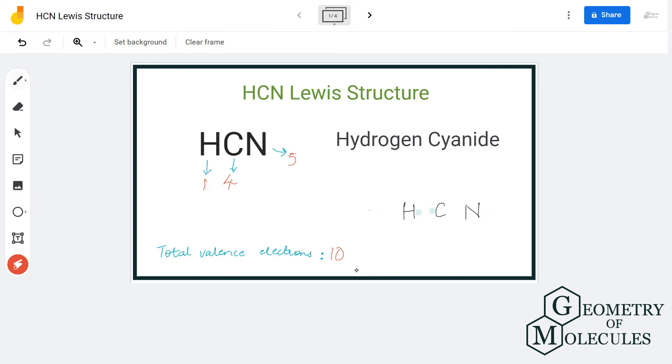So now hydrogen and carbon will form a bond which takes up two electrons of the valence electrons that we have. That means we are now left with eight valence electrons.